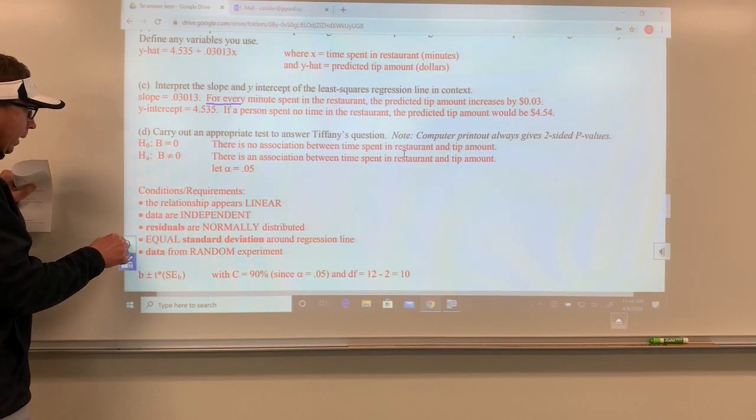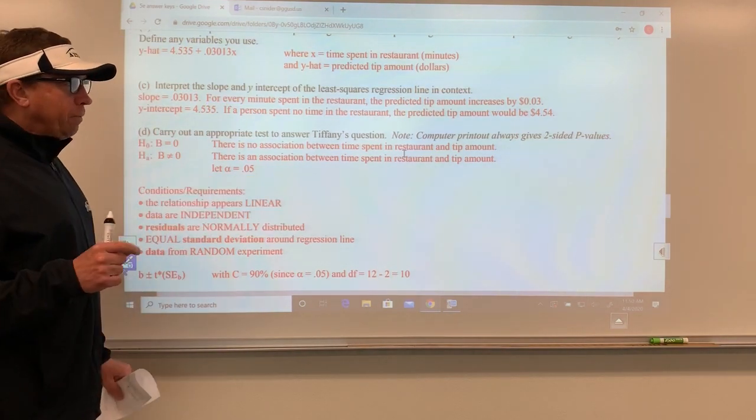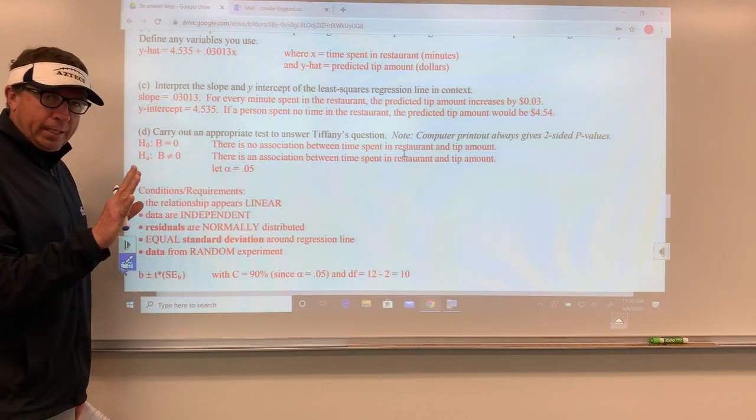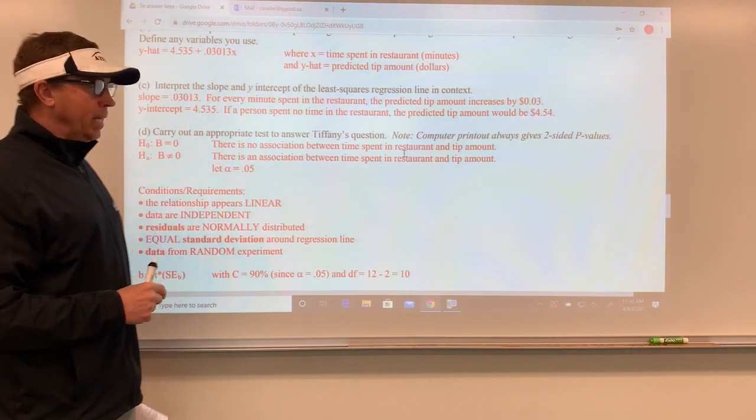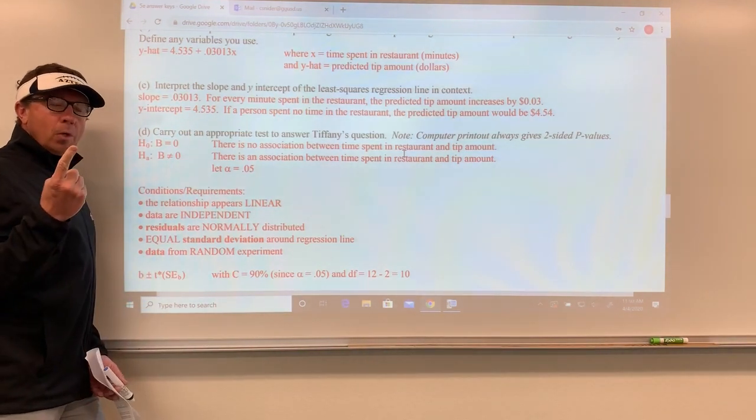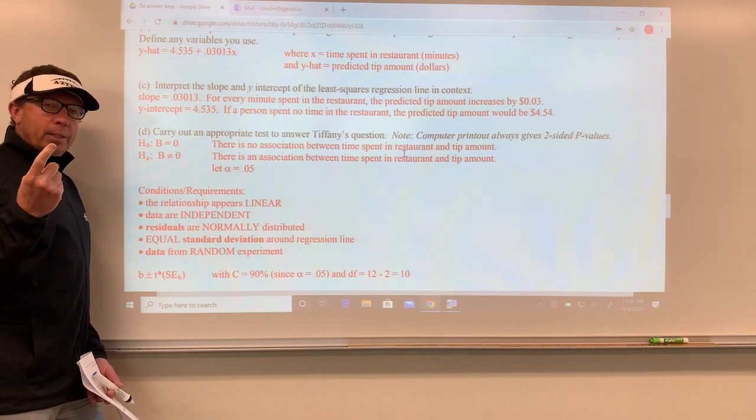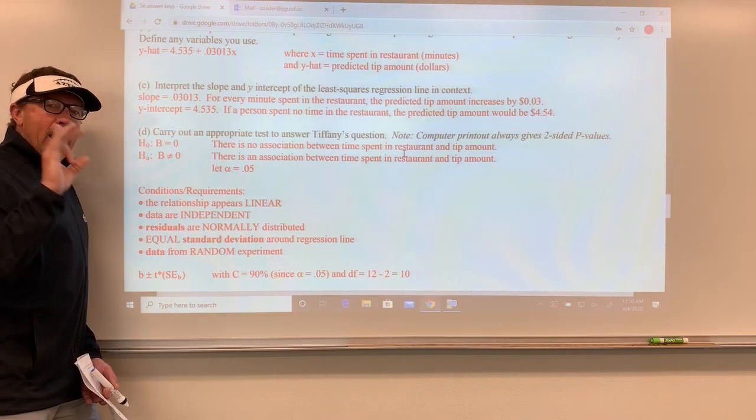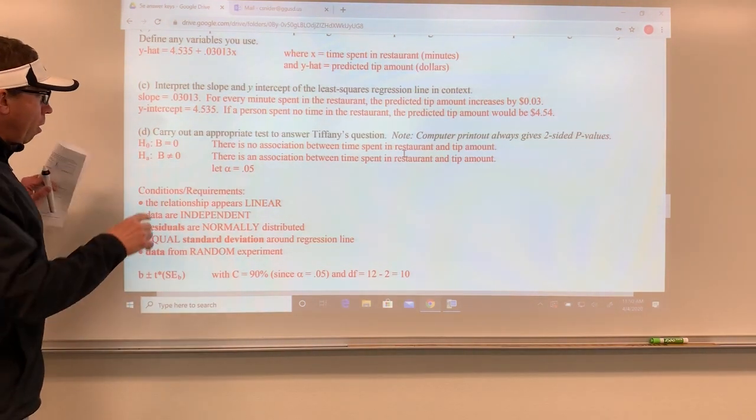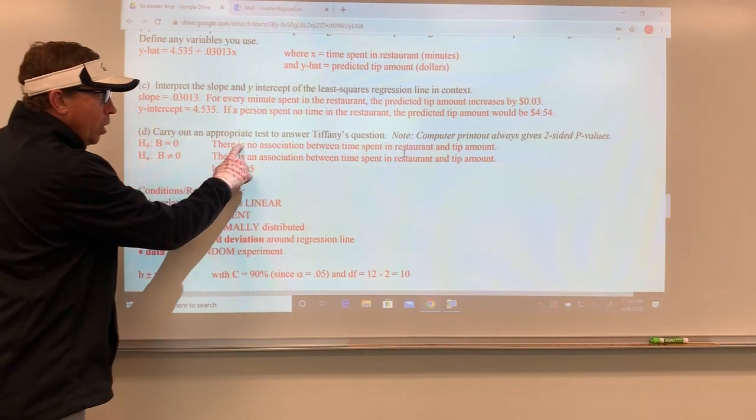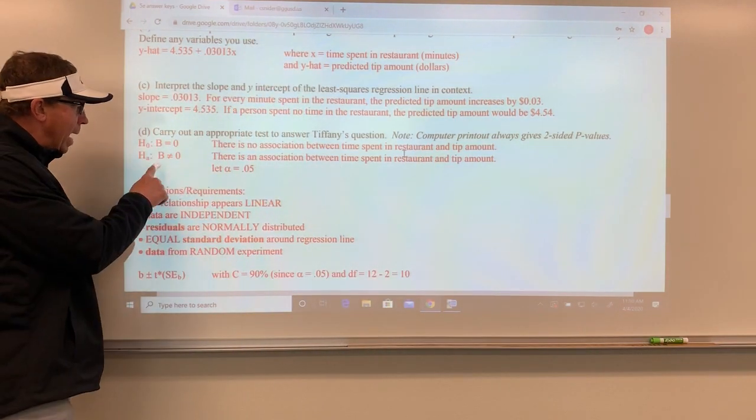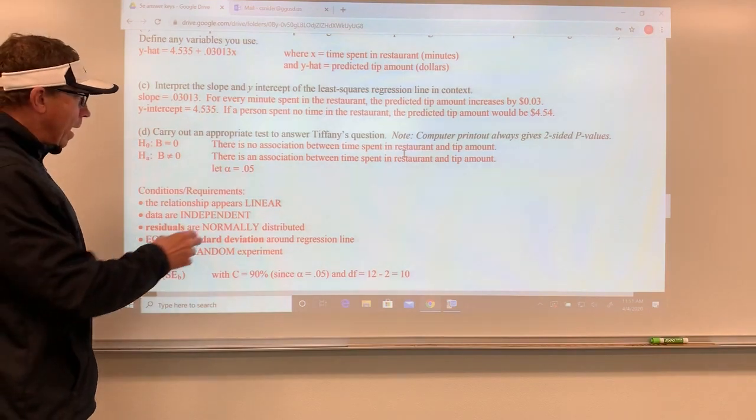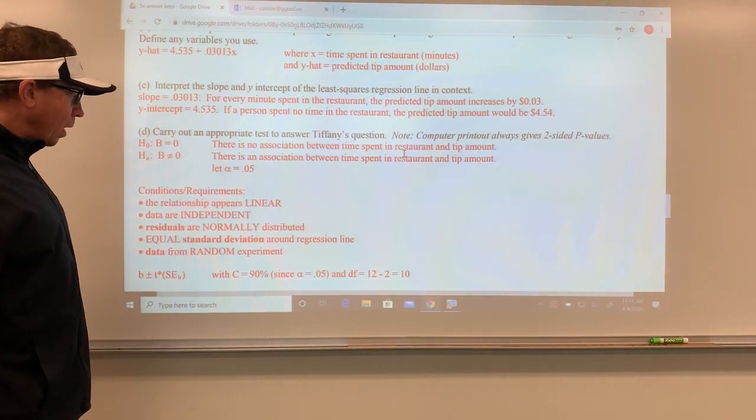Now let's go ahead and carry out this test. The test for the most part will not involve you to do any calculator work. It's already done for you. It involves just reading a sheet. For H0 and HA, we're not using mu, we're not using pi or p. This is not a proportion test, it's not a mean test, it's not a chi-square test. It's just words. It's a test for slope. We're wondering if that slope of 3 cents is significantly different than nothing, than zero. So H0: B is zero. It means there is no association between time spent in the restaurant and tip amount. And HA: B is not zero, two-sided. There is an association between time spent in the restaurant and tip amount. I'm going to do alpha of 0.05.